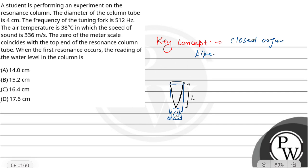The reading of the water level is L plus e, where e is the end correction. So we have the length of the tube plus end correction. This length equals lambda by 4. For a closed organ pipe at first resonance, L plus e equals λ/4.